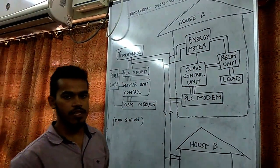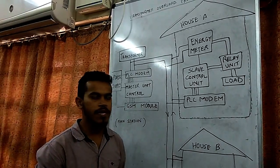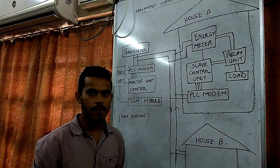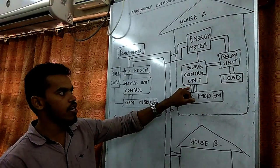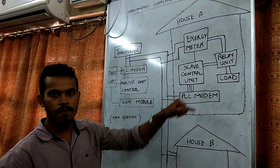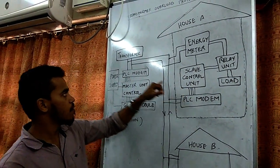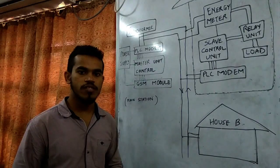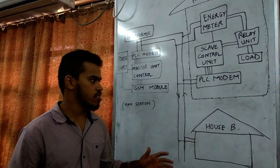The amount of energy used will be counted by the energy meter. It will be giving pulses which will be counted by the controller, and depending on the power consumption, it will inform the main station.